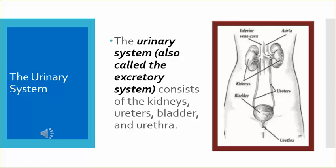The urinary system, also called the excretory system, consists of the kidneys, ureters, bladder, and urethra.